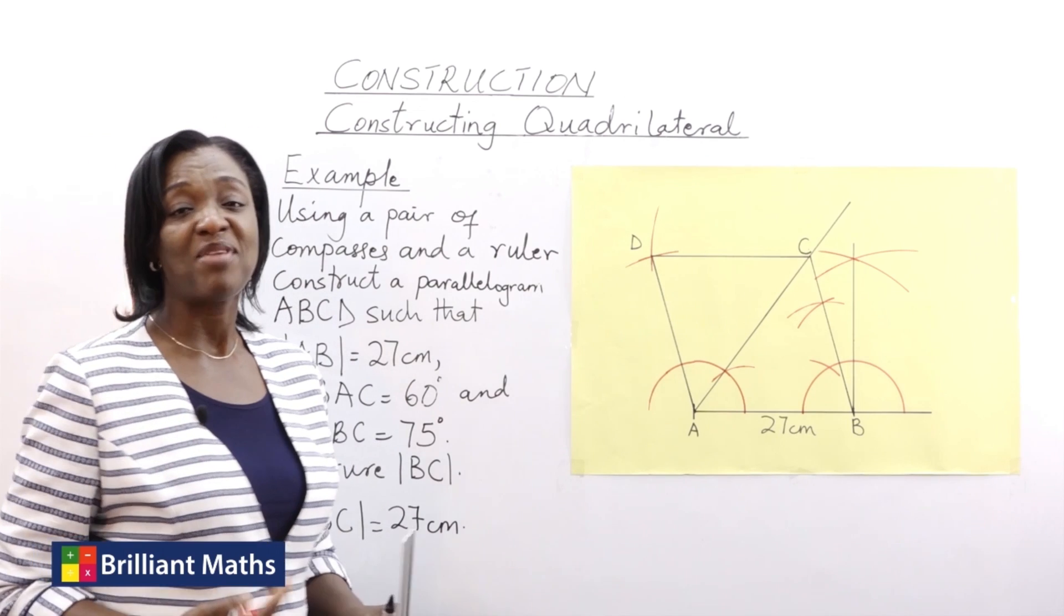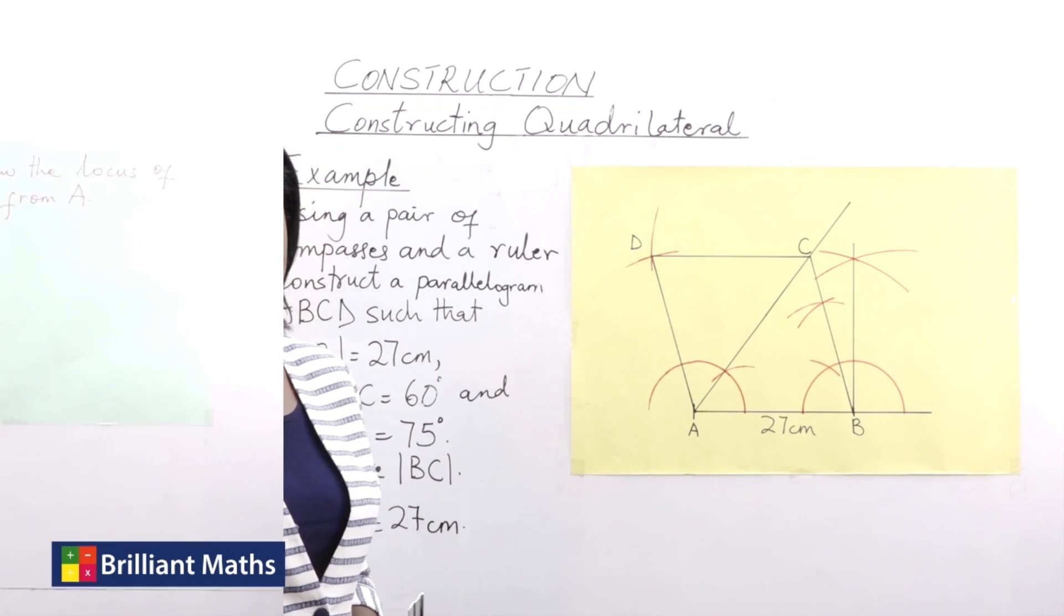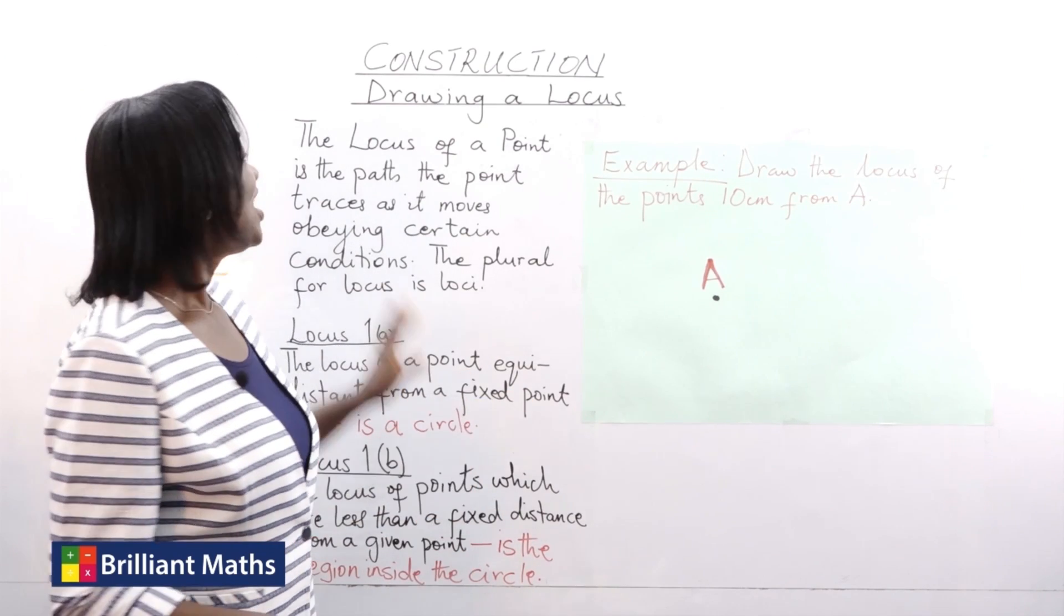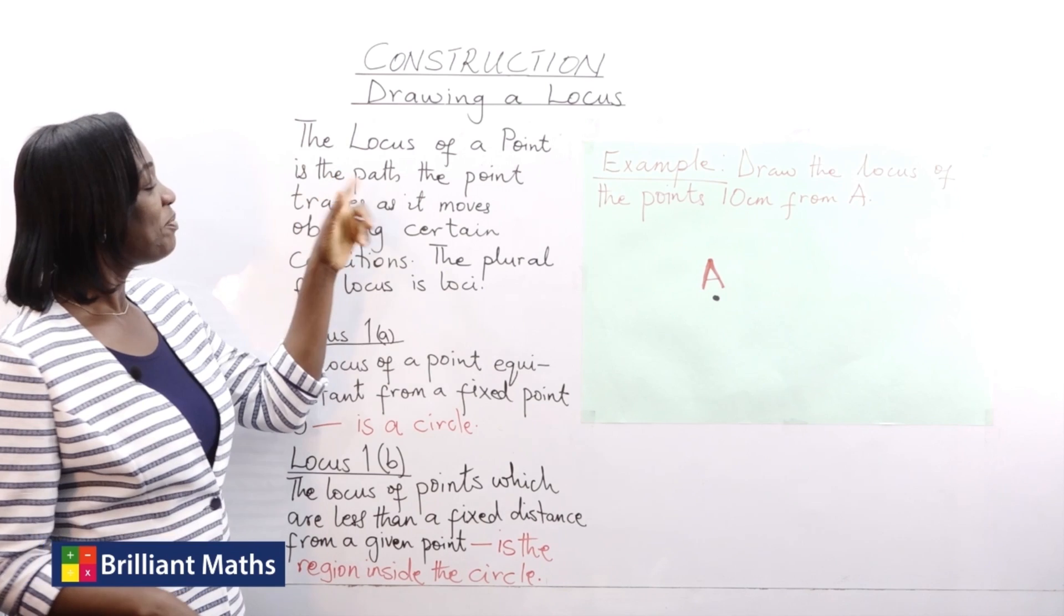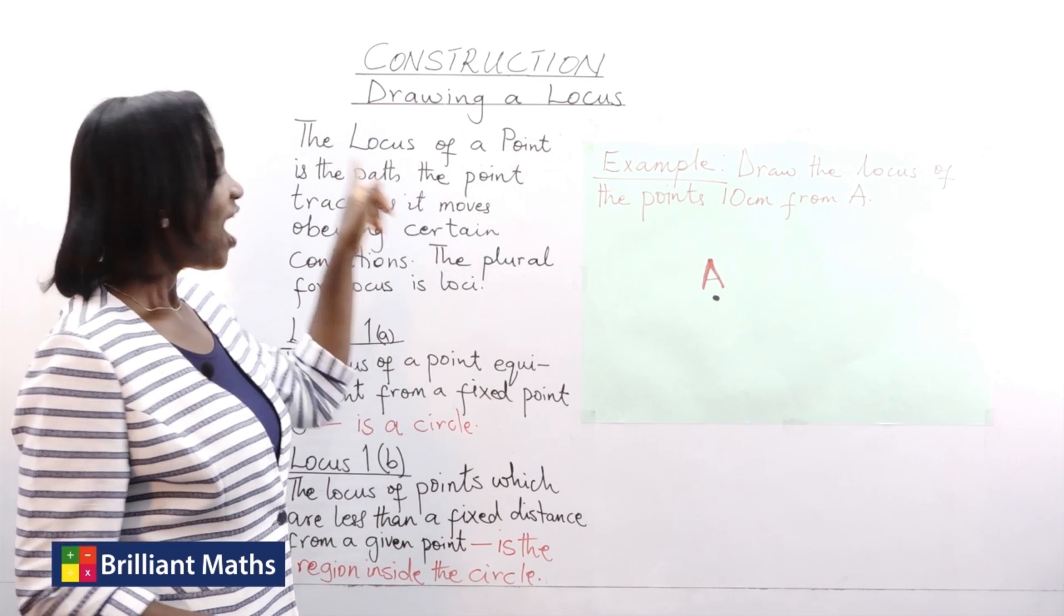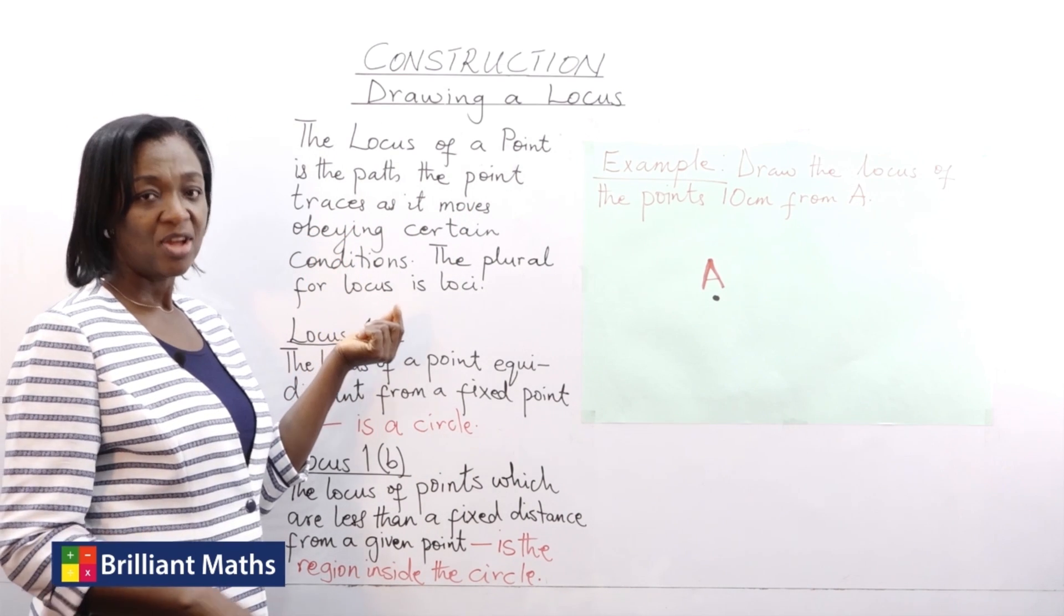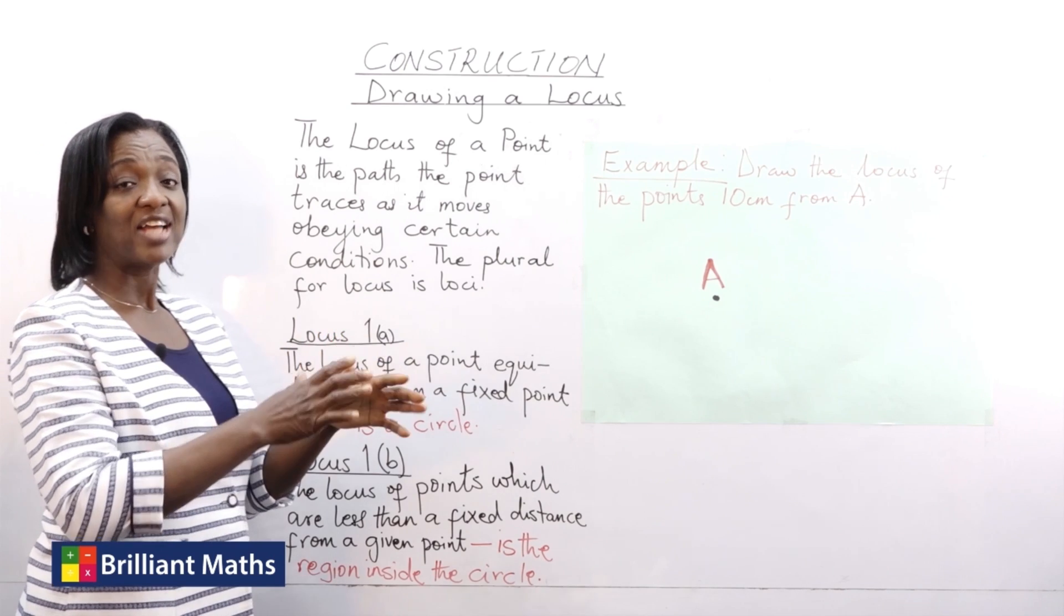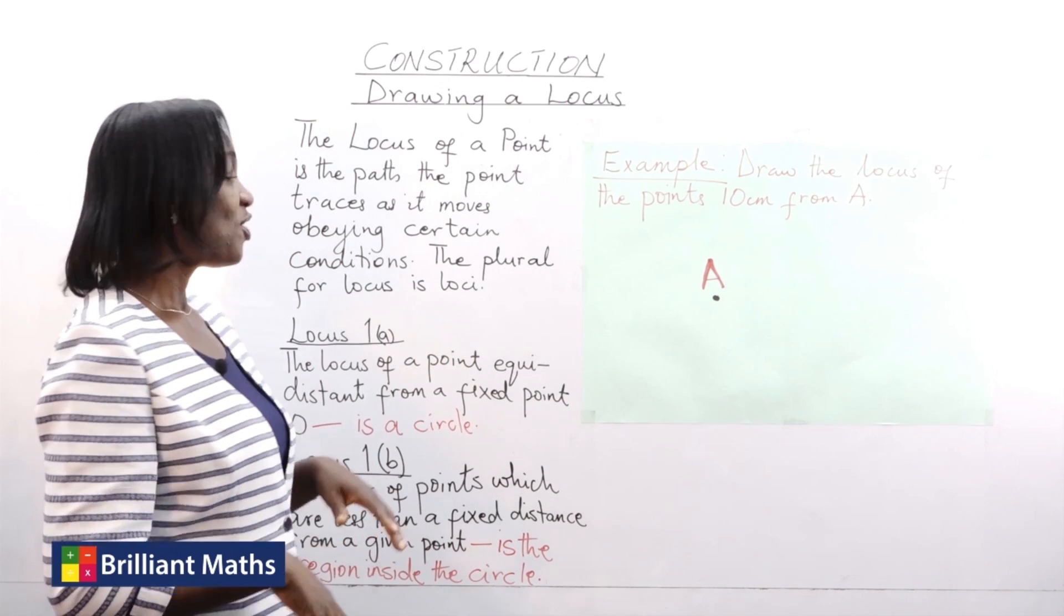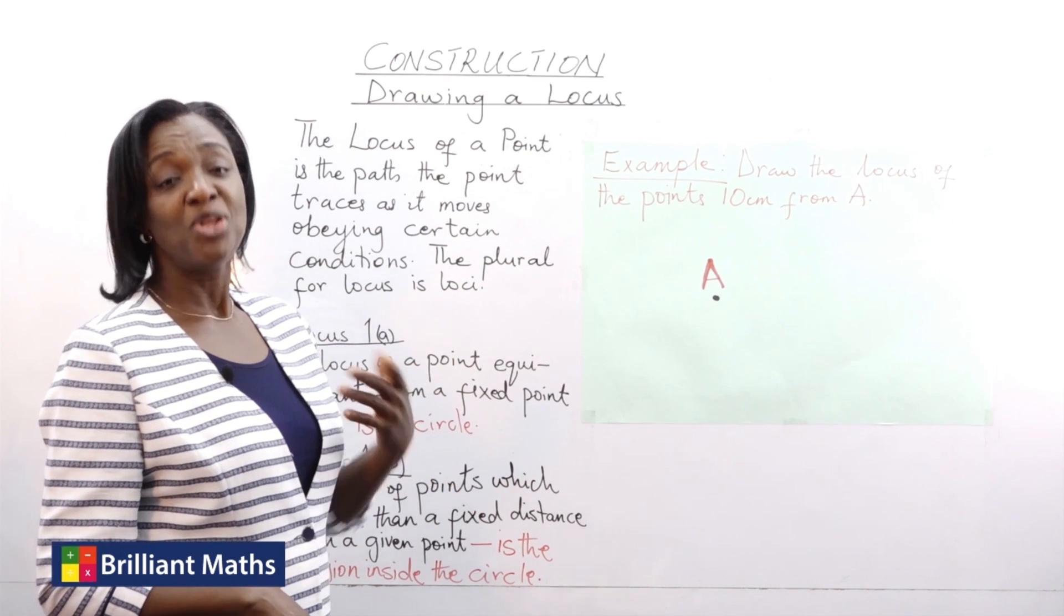In this part of the lesson, we are learning how to draw locus. The locus of a point is the path the point traces as it moves obeying certain given conditions. And the plural of locus is loci.